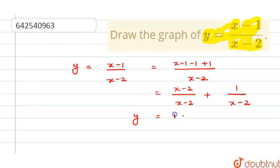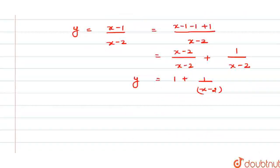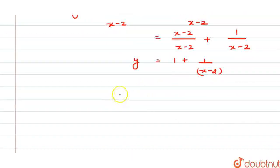So this is y equals 1 plus 1 upon (x-2), which if we take this 1 on the left hand side, then this will be (y-1) equals 1 upon (x-2).